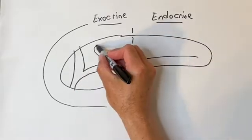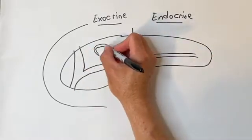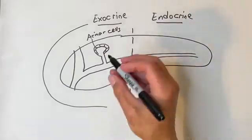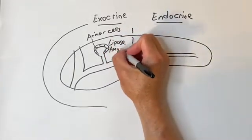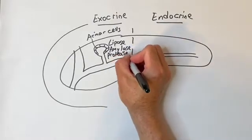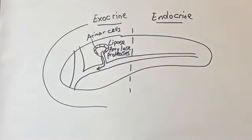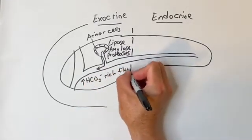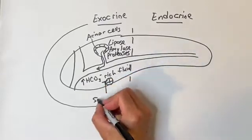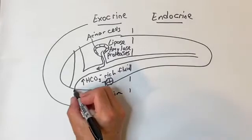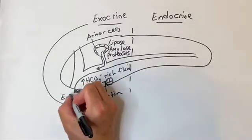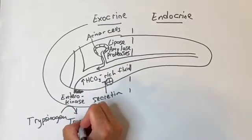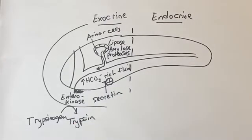The function of the pancreas is twofold: exocrine and endocrine. The exocrine function is to secrete bicarbonate-rich fluid, lipases to digest fats, amylase to digest starch, and proteases like trypsinogen to digest proteins. Secretin causes increased flow of pancreatic juices, and as flow increases the bicarbonate concentration increases. Amylase is the only oral enzyme secreted in its active form; the rest of the pancreatic enzymes are secreted in an inactive form and are activated by enterokinase on the brush border of the duodenum — for example, trypsinogen converted to trypsin.